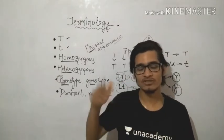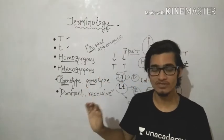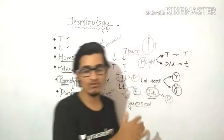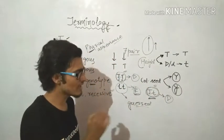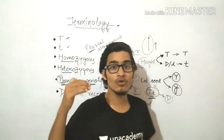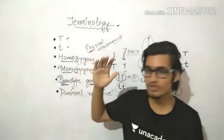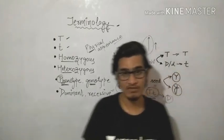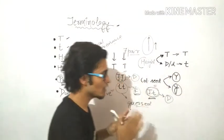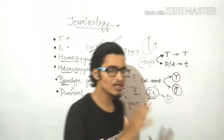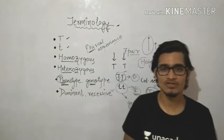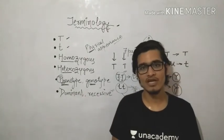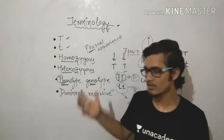The data shows that more than 10 to 12 questions are asked every year from these units — just from three chapters. Sometimes 18 to 19 questions are asked from genetics and evolution. So this is a very important unit. Make sure your concepts are clear and you practice well.